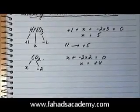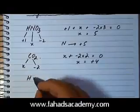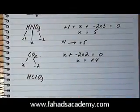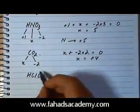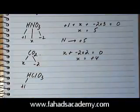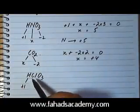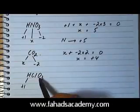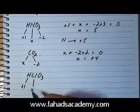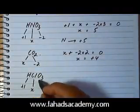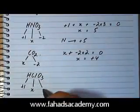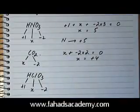Let's take a slightly more complicated molecule — HClO₃. This is slightly more complicated. We already have hydrogen, whose oxidation state is plus one. Chlorine would normally be minus one, except when it is bonded with oxygen. Since it is bonded with oxygen here, we don't know what the oxidation state of chlorine is — let's take that as X. Since oxygen is more electronegative than chlorine, oxygen retains its oxidation state of minus two.